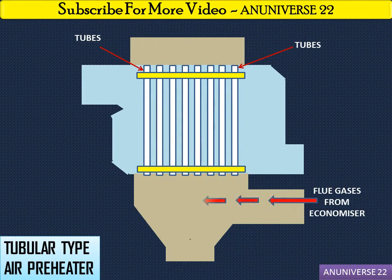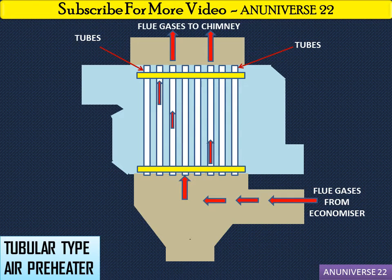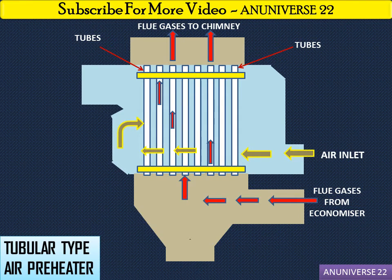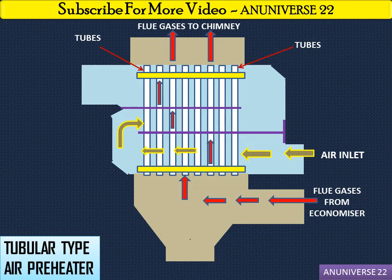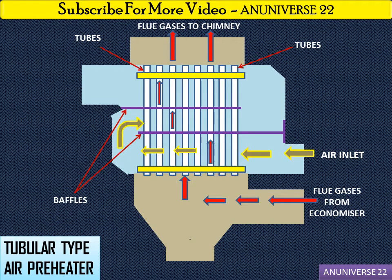As we can see, the flue gases from the economizer — these are the hot gases — are passed through the tubes. This is the air inlet. These are the baffles, which are provided to deflect the path of the air and compel it to move in a zigzag path a number of times. The air moves in a zigzag way through the baffles.